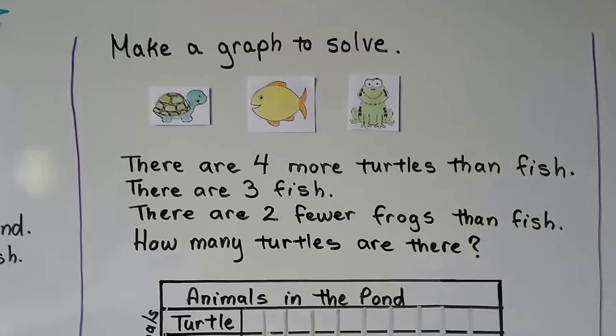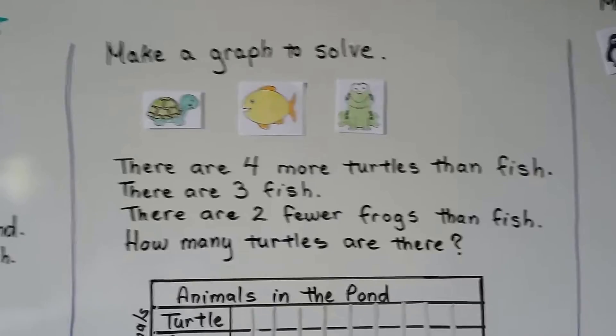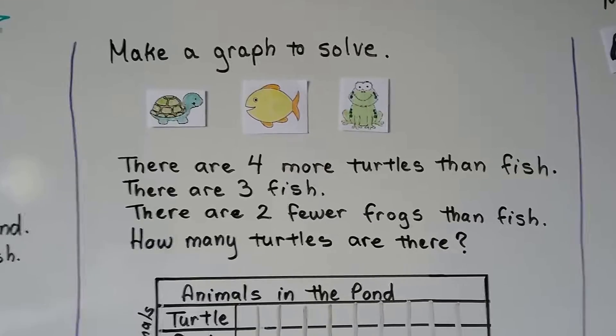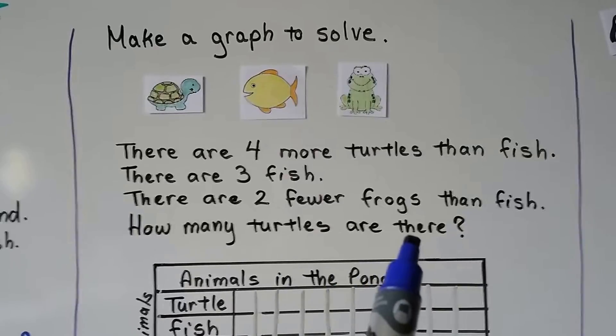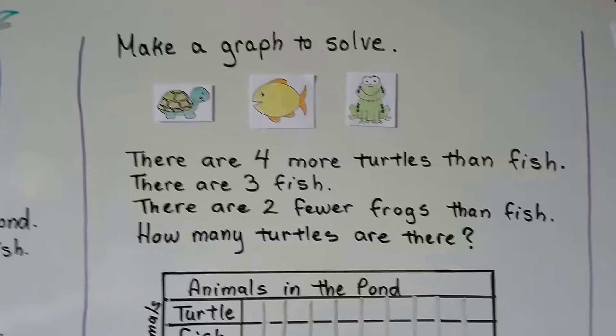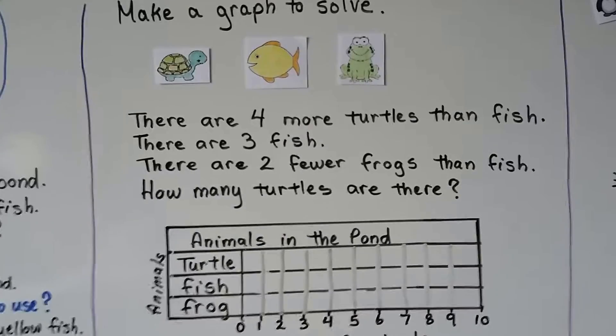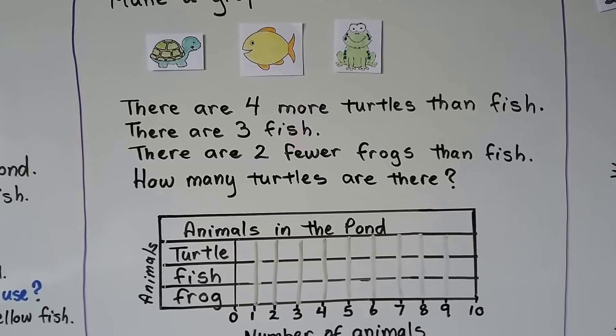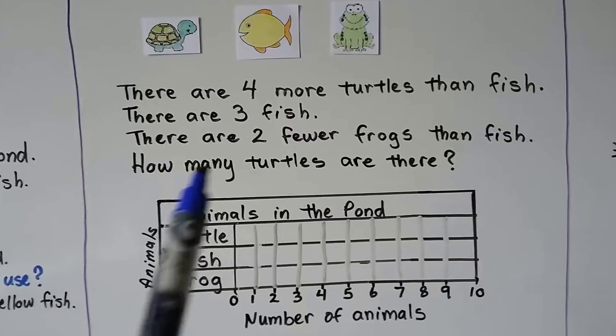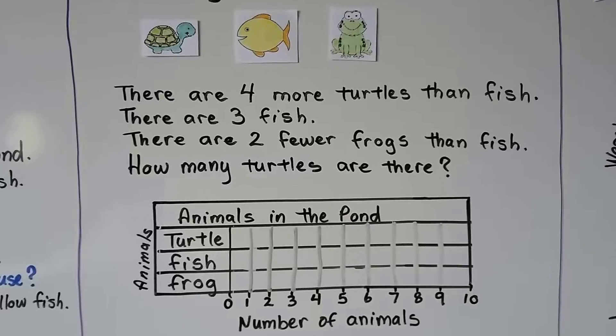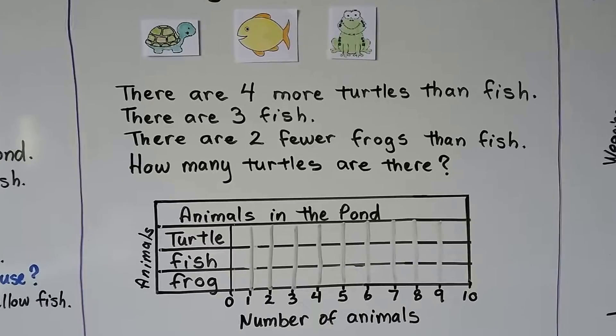We can make a graph to solve. Here we have a turtle, a fish and a frog. And there are turtles, fish and frogs in a pond. It tells us there are four more turtles than fish. It also tells us there are three fish and there are two fewer frogs than fish. And it wants to know how many turtles are there. So there's some information in here that we don't even need. We'll need it to fill out our bar graph, but we don't need it to know how many turtles there are. Can you see the information that is not needed? It's telling us there's four more turtles than fish and there's three fish. But then it starts talking about frogs. So we really don't need the information about the frogs, do we? We can put it into our bar graph, but we don't need it to find how many turtles there are. So let's start filling in our bar graph.